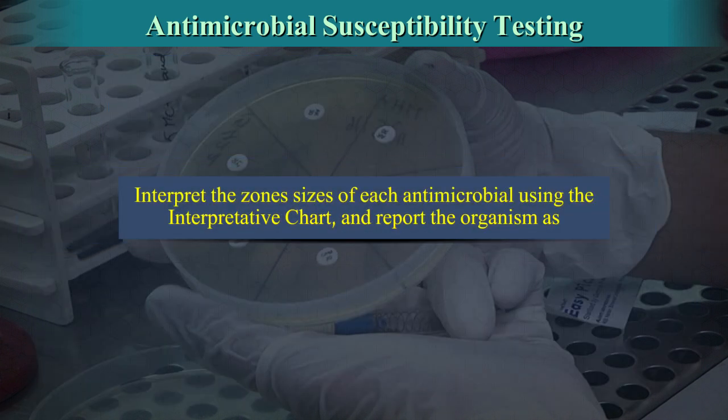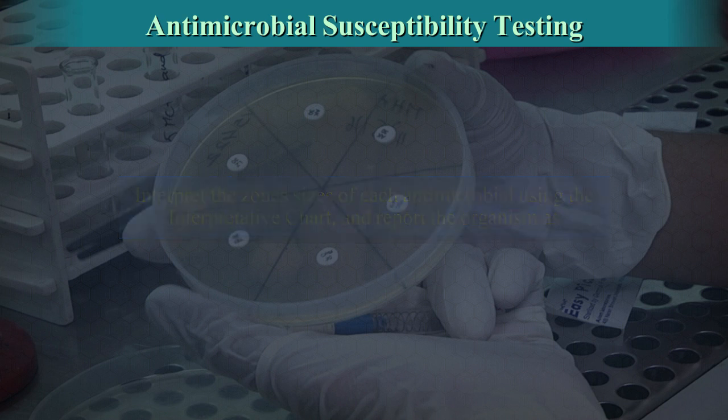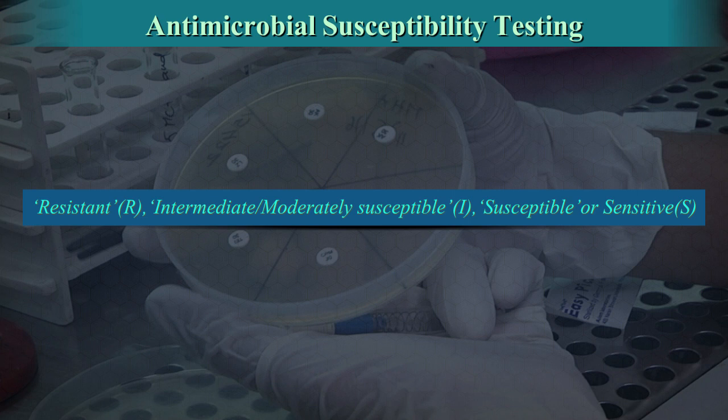Interpretation of Zone Sizes: Interpret the zone sizes of each antimicrobial using the CLSI interpretive chart and report the organism as resistant, intermediate or moderately susceptible, or susceptible or sensitive.